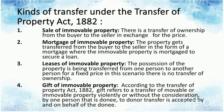Third, leases of immovable property — the possession of the property is transferred from one person to another for a fixed price. In this scenario, there is no transfer of ownership of property. Fourth, gift of immovable property — according to the Transfer of Property Act 1882, a gift refers to the transfer of movable or immovable property.